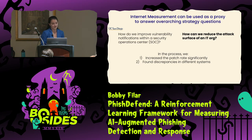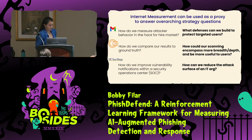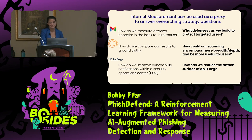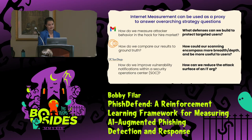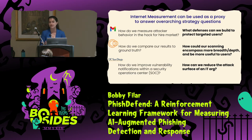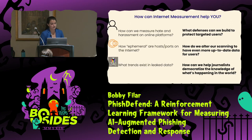We not only improved the process, but we uncovered systemic differences in infrastructure and figured out the right metrics. To my knowledge, these emails are continuing to be sent out and people are continuing to patch at UCSD. So in trying to figure out how to reduce the attack surface of a spread-out IT organization, we increased the patch rate significantly and found major discrepancies in systems and organizations that could then be remediated.